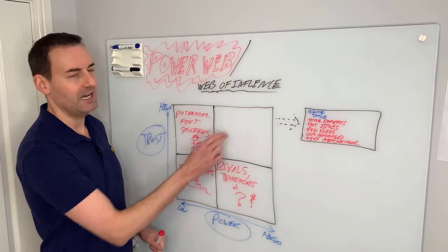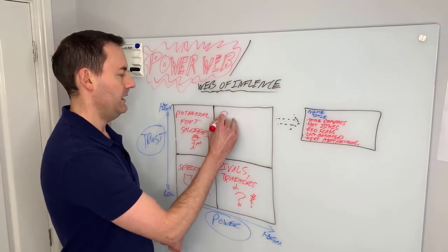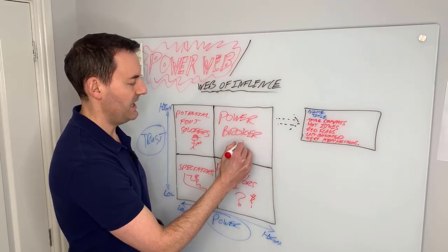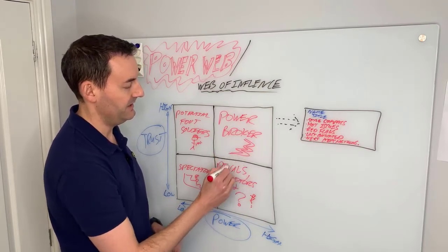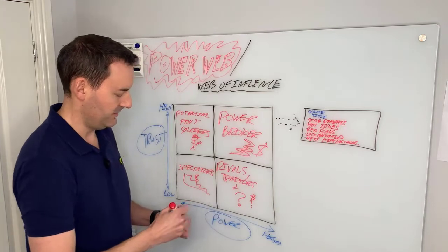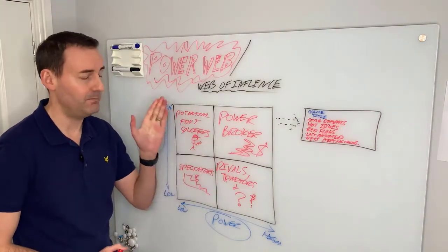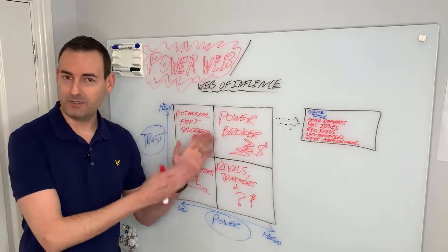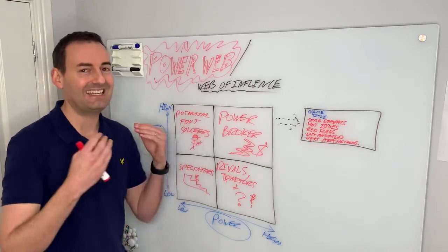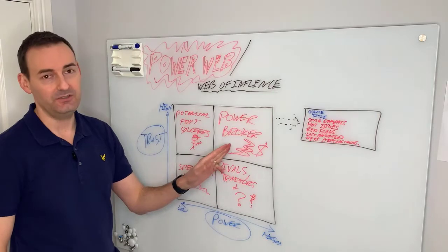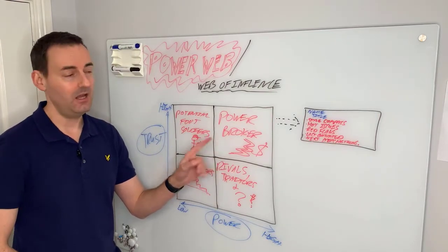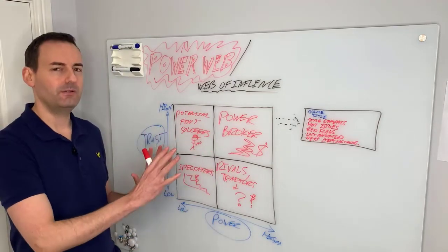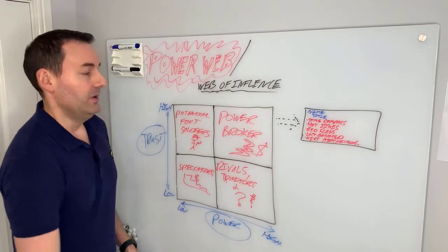If you have high power and high trust, then you are a power broker. So we'll do a big Zeus lightning bolt and a dollar sign here. You have the power and the trust — these people are trustworthy, and the organization trusts them, which means they can get things done sustainably. The CEOs and senior management of most companies are, and by all rights should be, here.